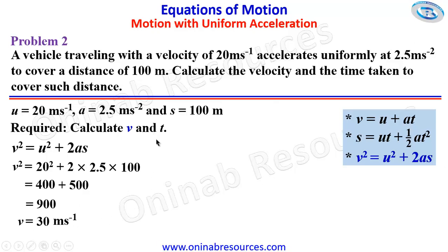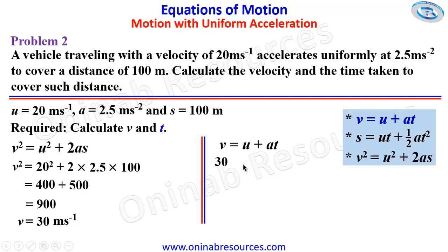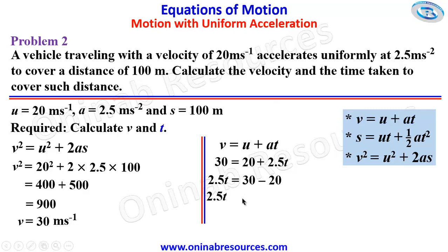So that's all for V. We then go ahead to calculate T. For T, we can use any of equations 1 or 2. We have V, U, and A, and we are looking for T, so we go for the first equation. Substituting: 30 is equal to 20 plus 2.5T. So 2.5T is equal to 30 minus 20. 2.5T is equal to 10. Dividing both sides by 2.5, T is equal to 4 seconds.